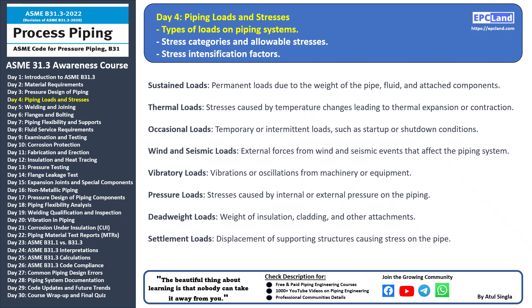Pressure loads are stresses induced by internal or external pressure on the piping that can impact its design and structural integrity. Deadweight loads include the weight of insulation, cladding, and other attachments — proper support and design considerations are needed to account for these. Settlement loads arise from displacement or settlement of support structures beneath the piping, which can introduce additional stresses and must be addressed to prevent deformation and failure. By understanding and analyzing these different load types, engineers can ensure that the piping system is designed to handle a wide range of conditions and maintain its safety and reliability.